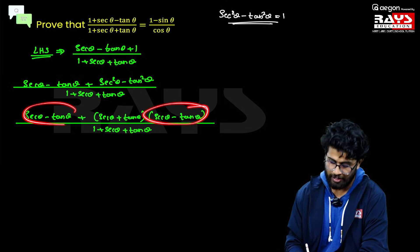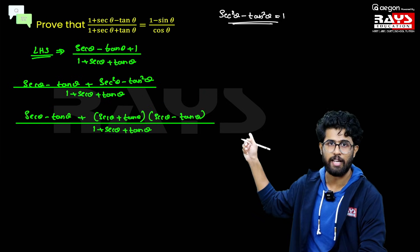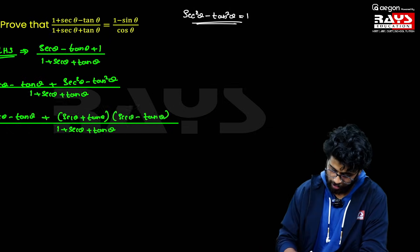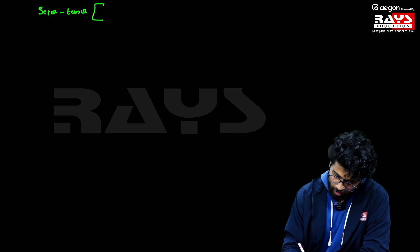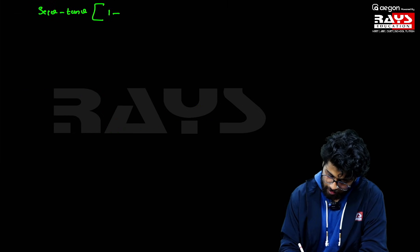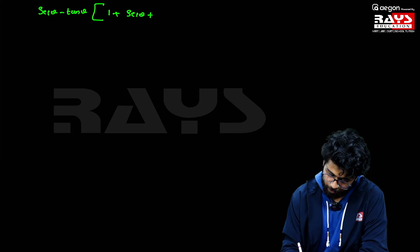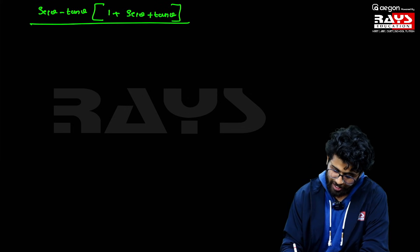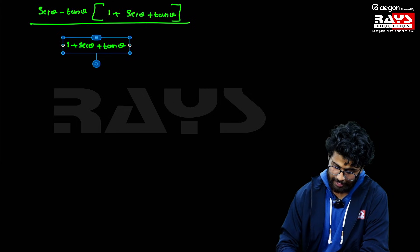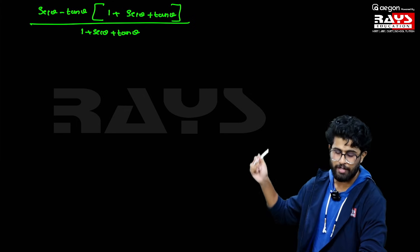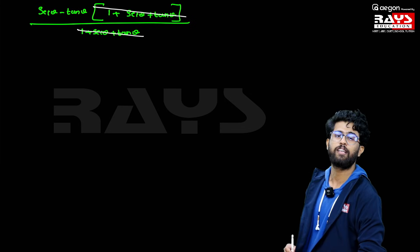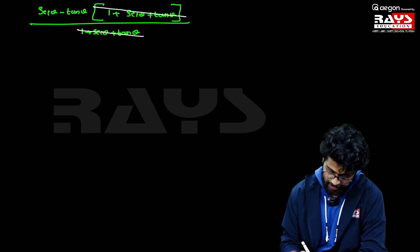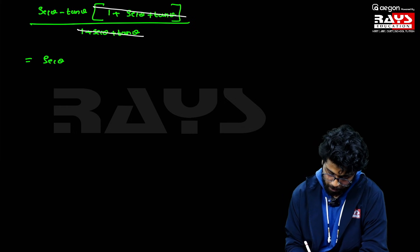As you can see, (sec θ − tan θ) is a common factor, so let's take it outside. We have (sec θ − tan θ) times (1 + sec θ + tan θ) in the numerator, and the denominator is also (1 + sec θ + tan θ). So we can cancel (1 + sec θ + tan θ) from numerator and denominator. The remaining part is just sec θ − tan θ.